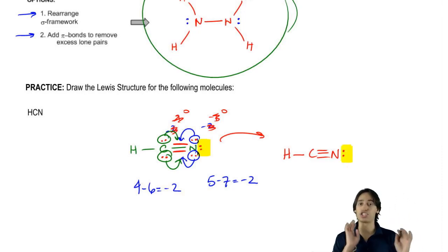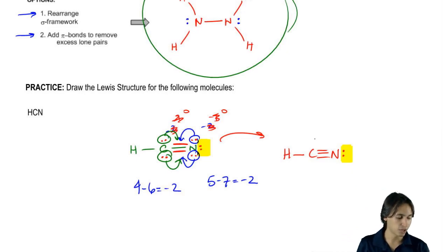Now I recalculate the formal charges to make sure I did it right. This carbon has a formal charge of zero. This nitrogen has three bonds and one lone pair, formal charge of zero. That is my right answer.